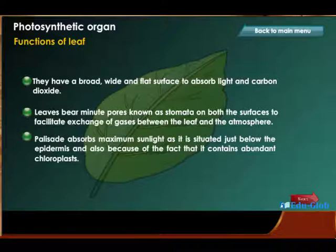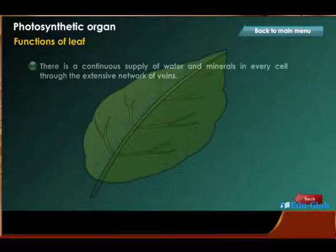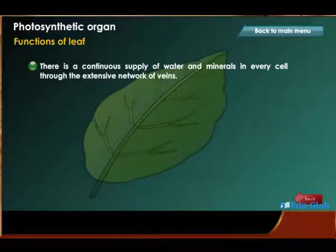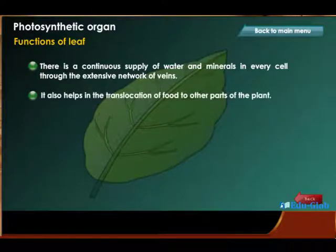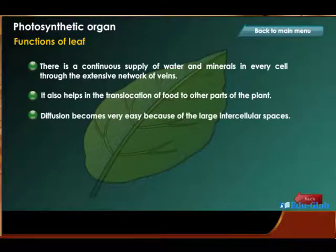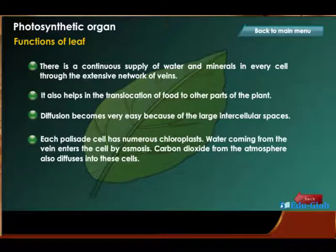The palisade layer absorbs maximum sunlight as it is situated just below the epidermis. There is a continuous supply of water and minerals in every cell through the extensive network of veins, which also helps in the translocation of food to other parts of the plant. Diffusion becomes very easy because of the large intercellular spaces.